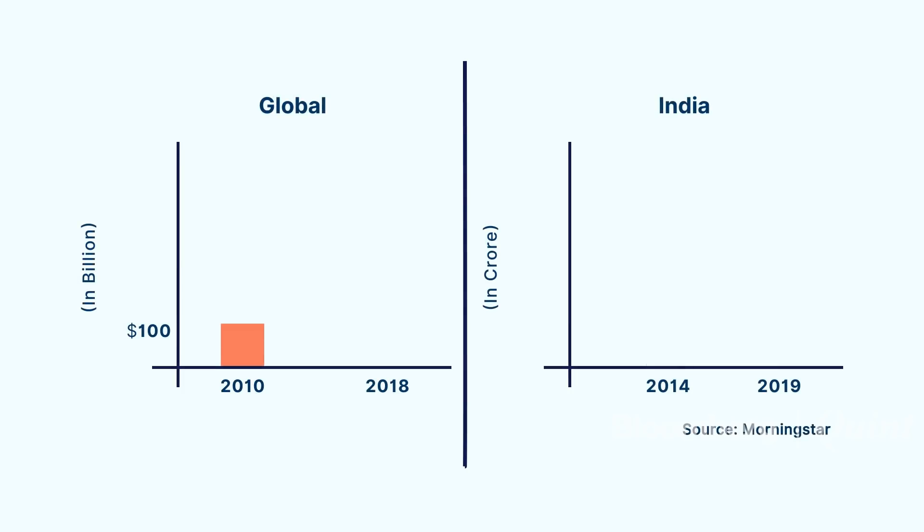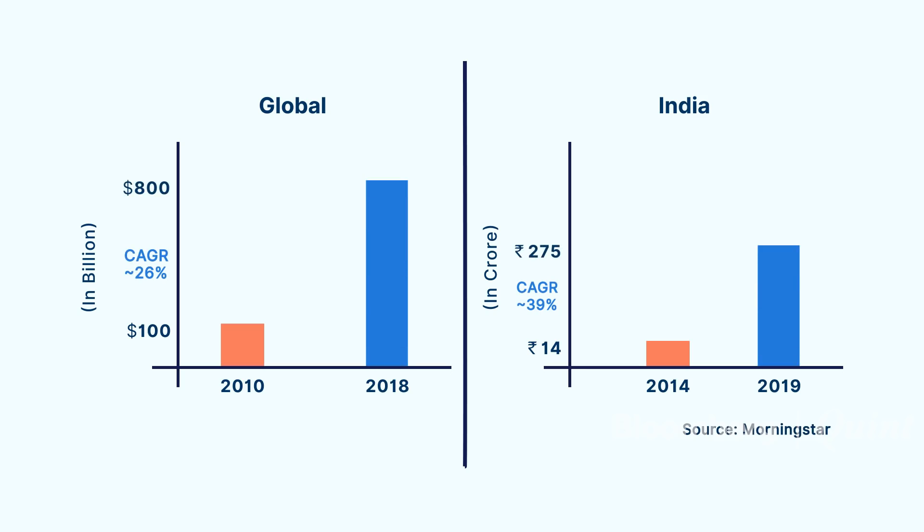Once we determine that this is the way of investing, just some data points to make the case very strong: smart beta is picking up very phenomenally across the globe. In 2010, the total assets parked into smart beta strategies was around $100 billion. But today it has grown to almost $800 billion — a cumulative growth of around 25–26%. So globally, people are getting more and more inclined towards smart beta strategies.